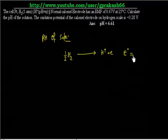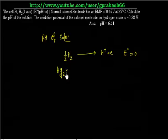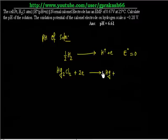E° for this half-cell is 0 because this is the standard hydrogen electrode. On the left side we have the calomel electrode. The left side is oxidation and the right side is reduction. So on the right side I will write reduction: Hg₂Cl₂ + 2 electrons → 2Hg + 2Cl⁻.